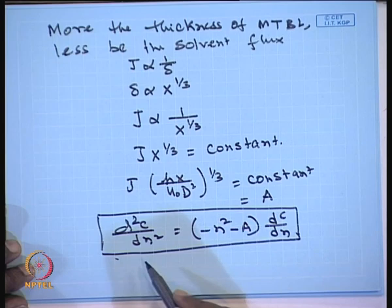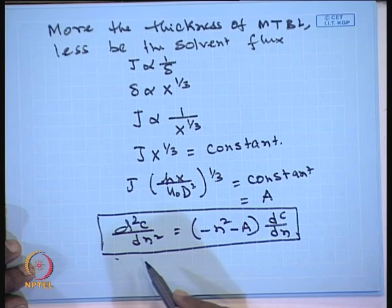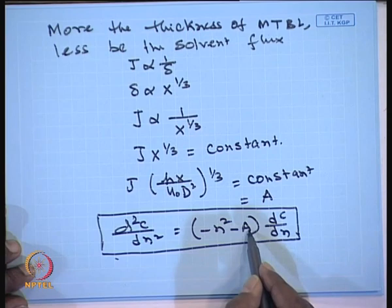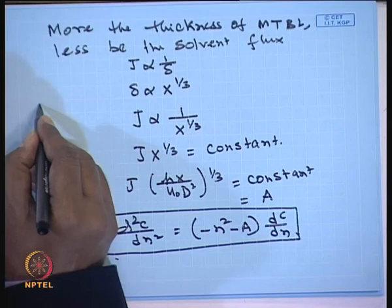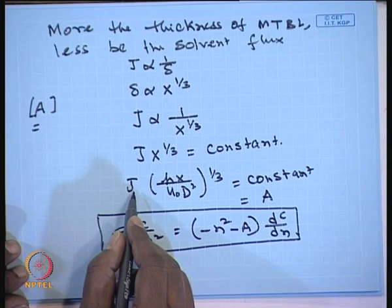Under this situation, our governing equation now becomes: d²c/dη² = −(η² − A) · dc/dη, or equivalently d²c/dη² = −(η² + A) · dc/dη. This is the form of the governing equation.